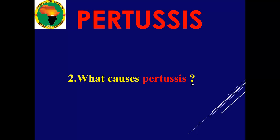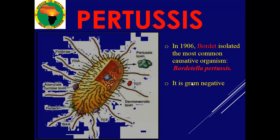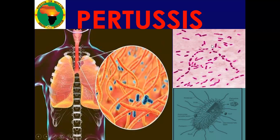The main cause is this bacillus called Bordetella pertussis. It was discovered and isolated by Bordet in 1906. This bacillus causes the infection. It is gram-negative, which is determined by microscopic examination — it remains red after the staining correlation process. This is how it looks when examined under a microscope, invading the respiratory tree and causing very severe cough.